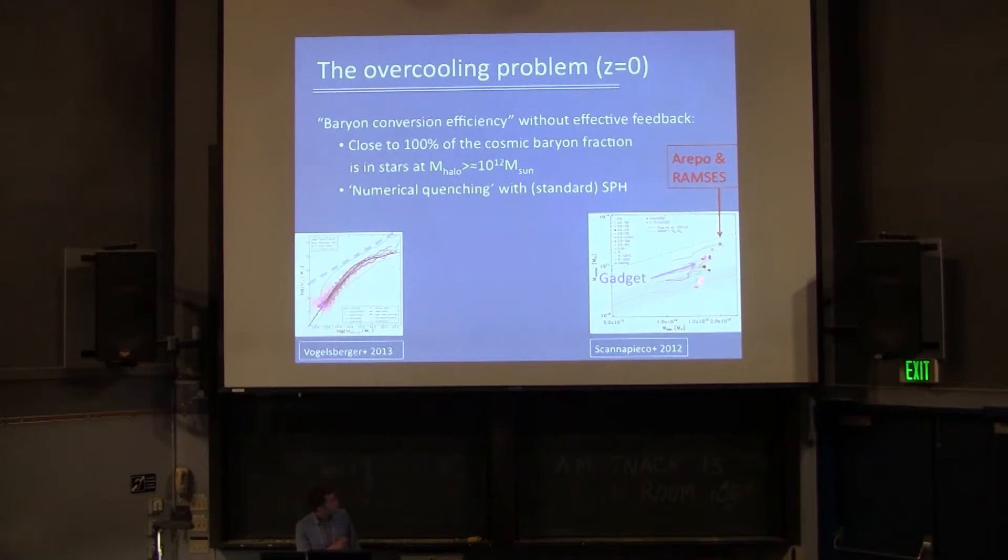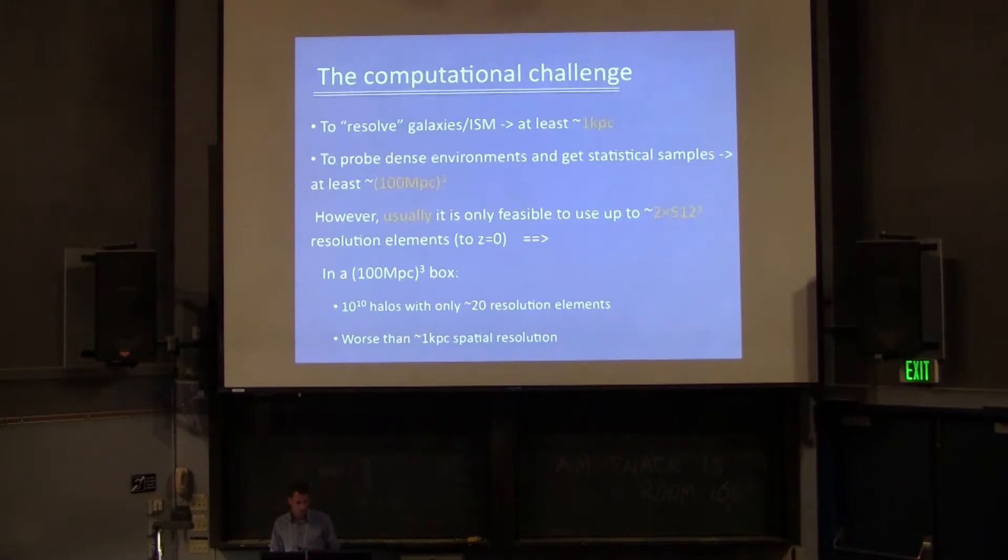The same thing is shown here from the Aquila comparison project, where we see a bunch of different codes with different physical modeling and also different numerical approaches. We see that both of these things affect the results. Most of this scatter is from different physical modeling. But these two dots here, RAMSES and AREPO versus GADGET, have the same physics exactly. So it's only the numerical code that also creates very large differences in the stellar mass we form.